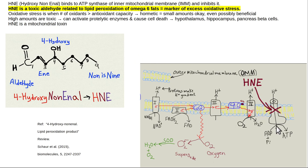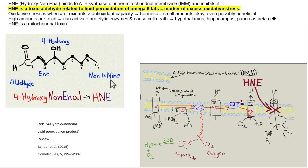HNE is a major problem because it inhibits ATP synthase in the inner mitochondrial membrane. Anything that damages mitochondrial energy production will tend to cause insulin resistance. When you hear the term 'oxidative stress,' it means you have more oxidants than antioxidant capacity. Small amounts can be hormetic, but in large amounts they cause cascading chain reactions that damage normal tissue — particularly through omega-6 cooking oil-related HNE.